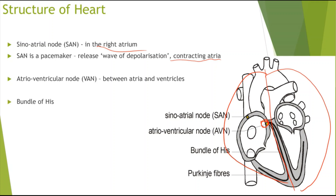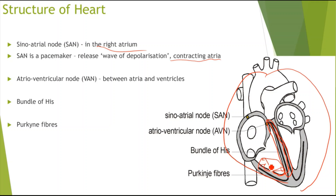We also have the bundle of His, which basically goes down the septum. And the bundle of His would go on to form Purkinje fibres, which are located around the bottom of the heart.